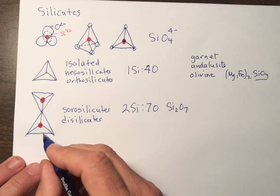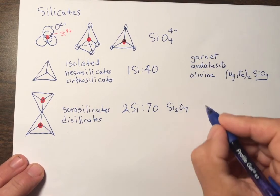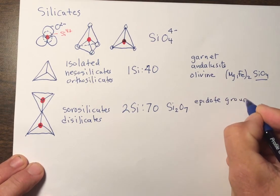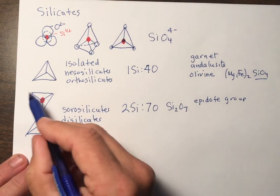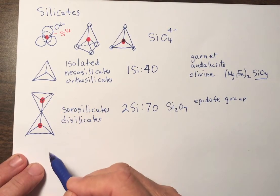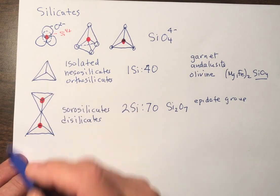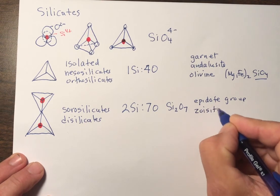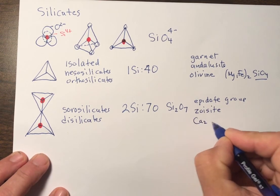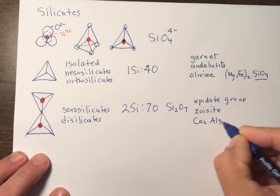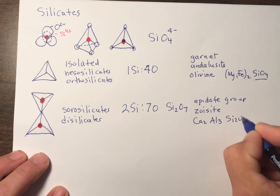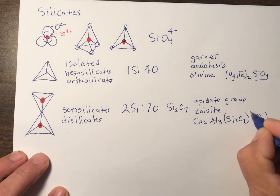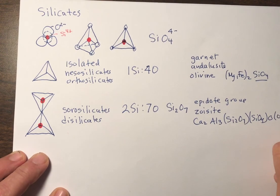And not too many members of the sorosilicate group, but they include the important epidote group. And that is an interesting set of minerals. They include both the disilicate structures and isolated silicate structures and isolated silica tetrahedron. For example, zoisite or clinozoisite has the formula as follows: Ca2Al3Si2O7 SiO4 O OH, like that.